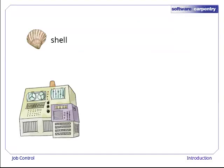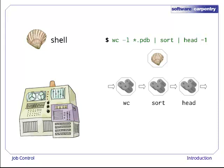We're looking at how to control a computer using a command-line shell. We've seen how to use pipes to combine programs, which tells the shell to use the output of one as the input of the next. What we'll look at in this episode is how to control programs once they're running.